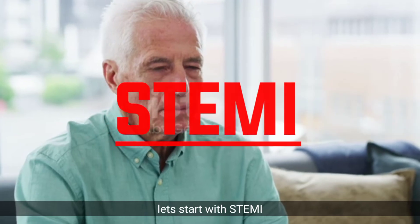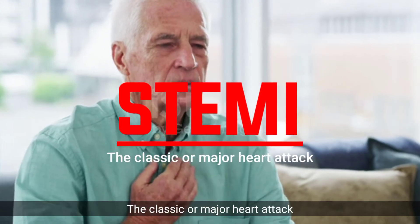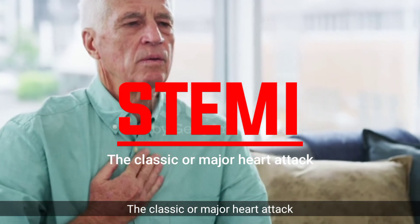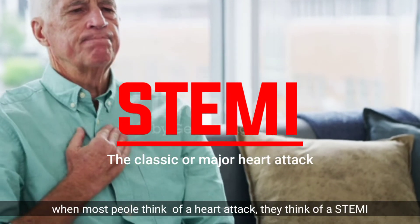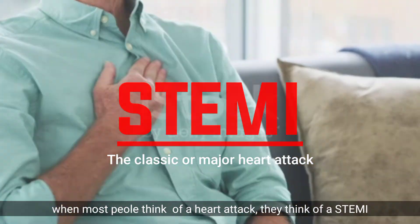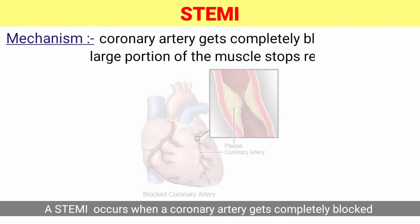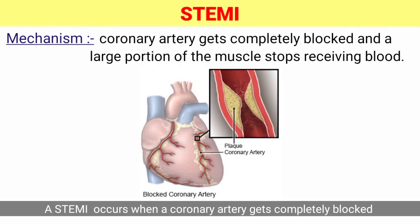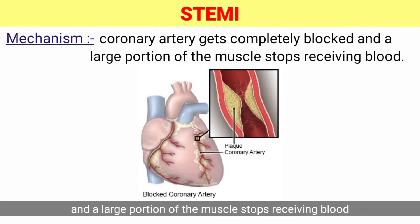Let's start with STEMI — the classic or major heart attack. When most people think of a heart attack, they think of a STEMI. A STEMI occurs when a coronary artery gets completely blocked and a large portion of the muscle stops receiving blood. It's a serious heart attack that can cause significant damage.